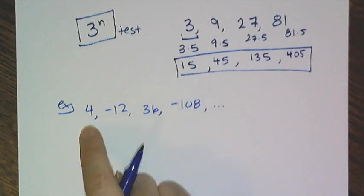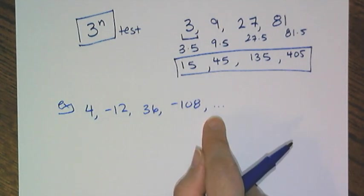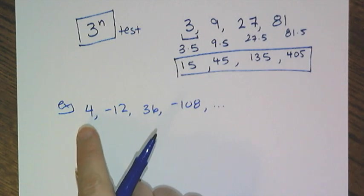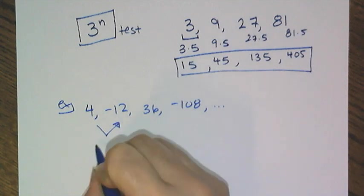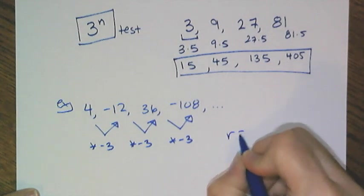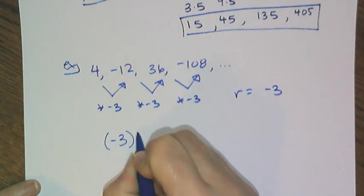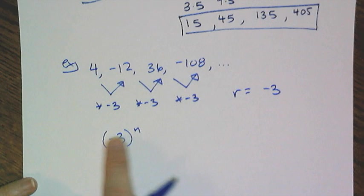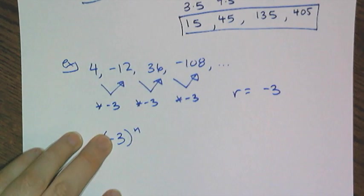So, if we look at this sequence, I see the signs are alternating, so that means that the common ratio is going to be negative, and what turns a 4 into a negative 12? Well, that's a multiplication of negative 3, so my common ratio is now negative 3. I know it has to be negative 3 to the nth power, or it has to have negative 3 to the nth power. Notice how I wrote that in parentheses. It has to be in parentheses if the signs are going to alternate.